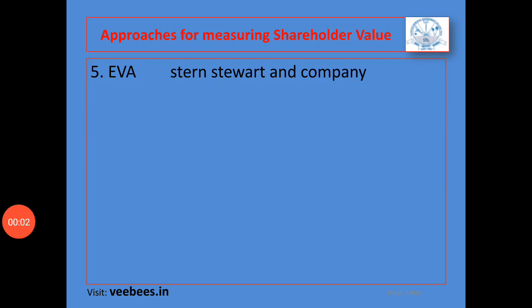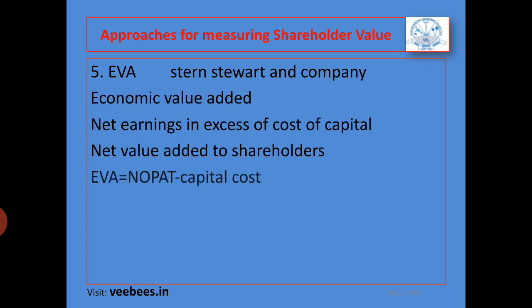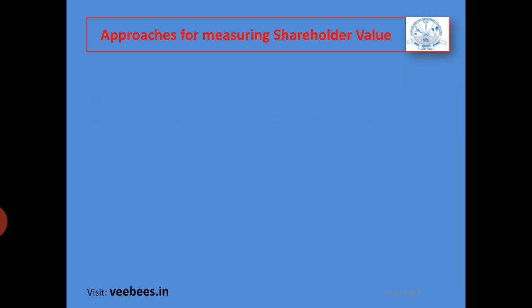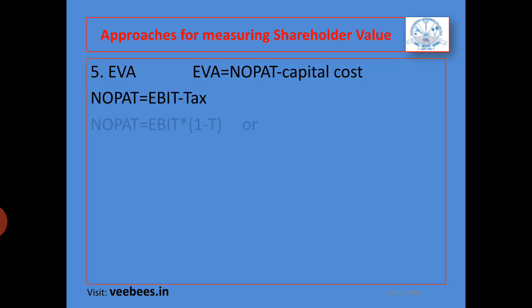Hi all. We have already discussed the idea of EVA and we have tried only small problems. I am repeating this because it is an important idea. EVA can be calculated using the equation: EVA equals NOPAT minus capital cost, or NOPAT minus total capital into K, or EVA equals capital into R minus K. Another idea we discussed is the calculation of NOPAT.